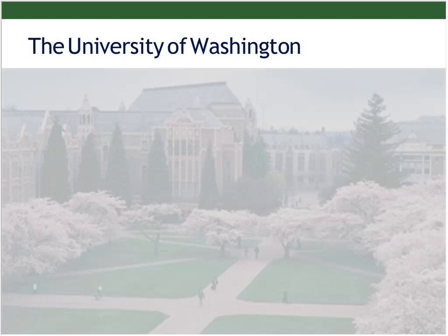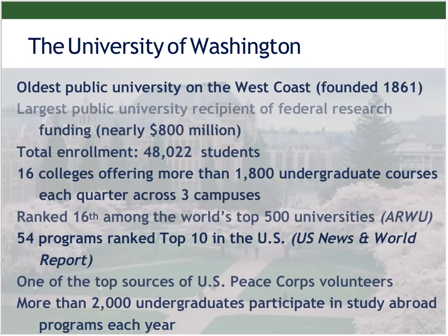Just to provide some background: at the University of Washington, we are the oldest public university on the west coast, about 150 years old. The fact I want to focus on is that we are the largest public university recipient of federal research funding — nearly $800 million in the last fiscal year. We are about research, and we try to do everything we can to make sure that we support the research process here at the University of Washington.